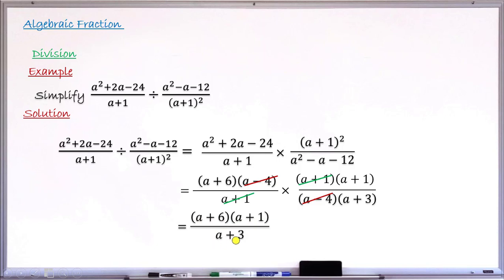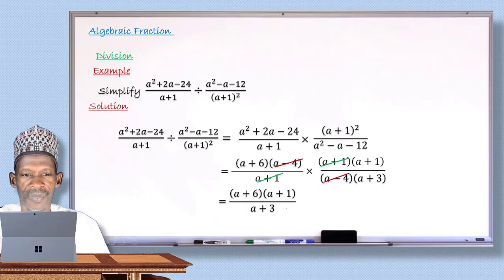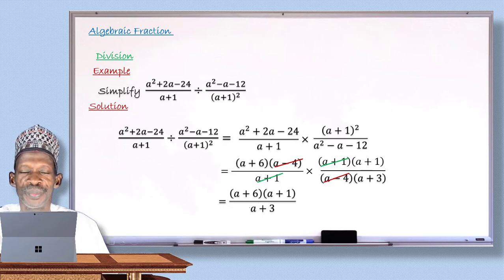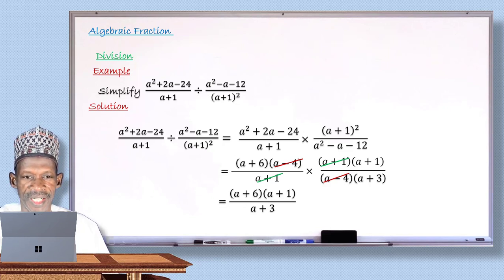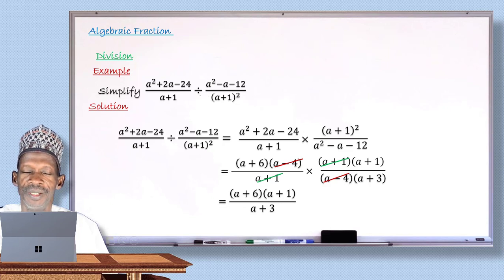Multiplying the remaining factors, the final simplified result is (a + 6)(a + 1) all over (a + 3). With this, I have come to the end of this lesson. I hope with the examples given you'll be able to divide two algebraic fractions. Let me now move to the last segment — the fun fact about the number 11.